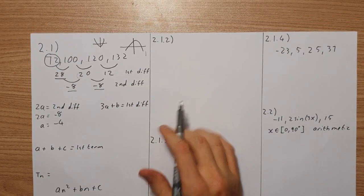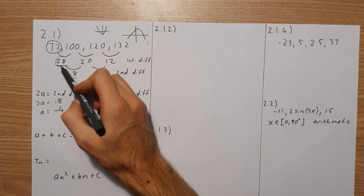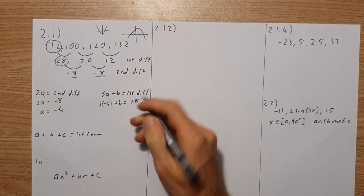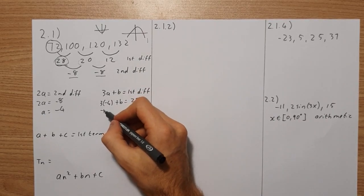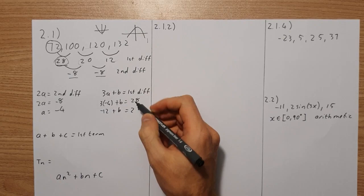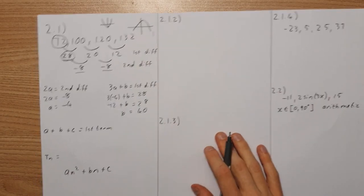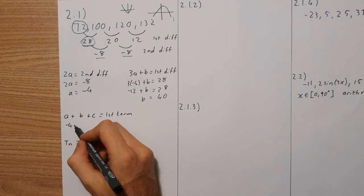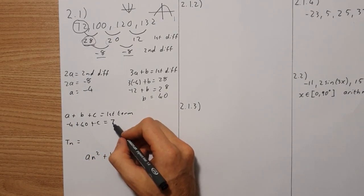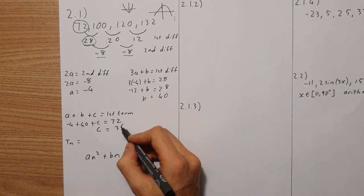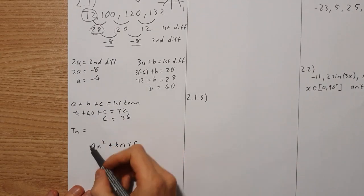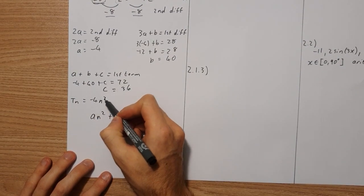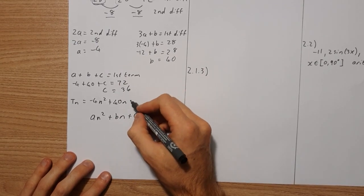To solve for B, we use 3A + B equals the first difference, which is 28. So 3(−4) + B = 28, giving −12 + B = 28, therefore B = 40. To find C, A + B + C equals the first term: −4 + 40 + C = 72, so C = 36. Filling everything in, the nth term is Tn = −4n² + 40n + 36.